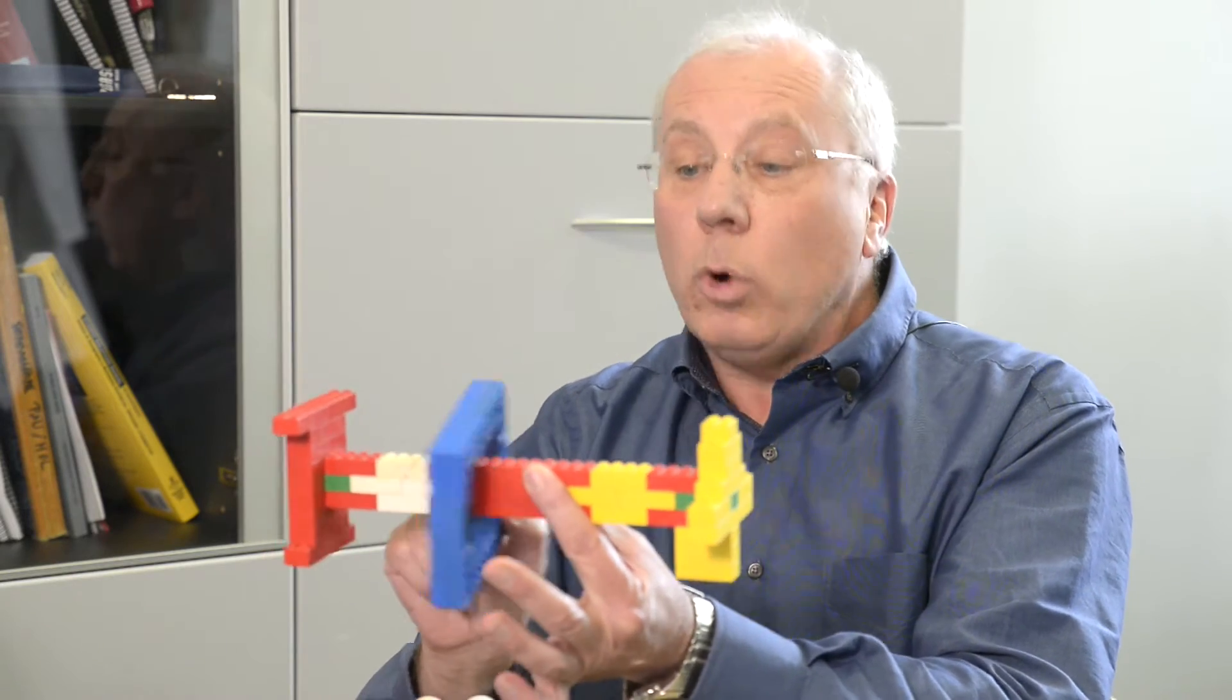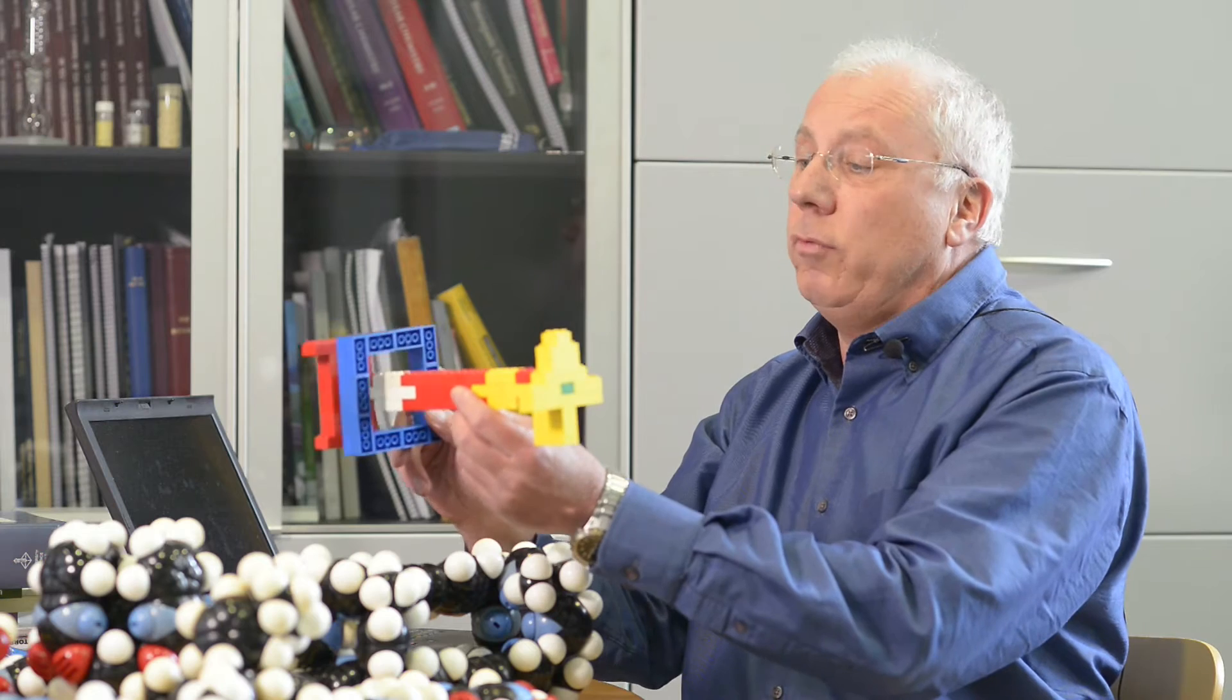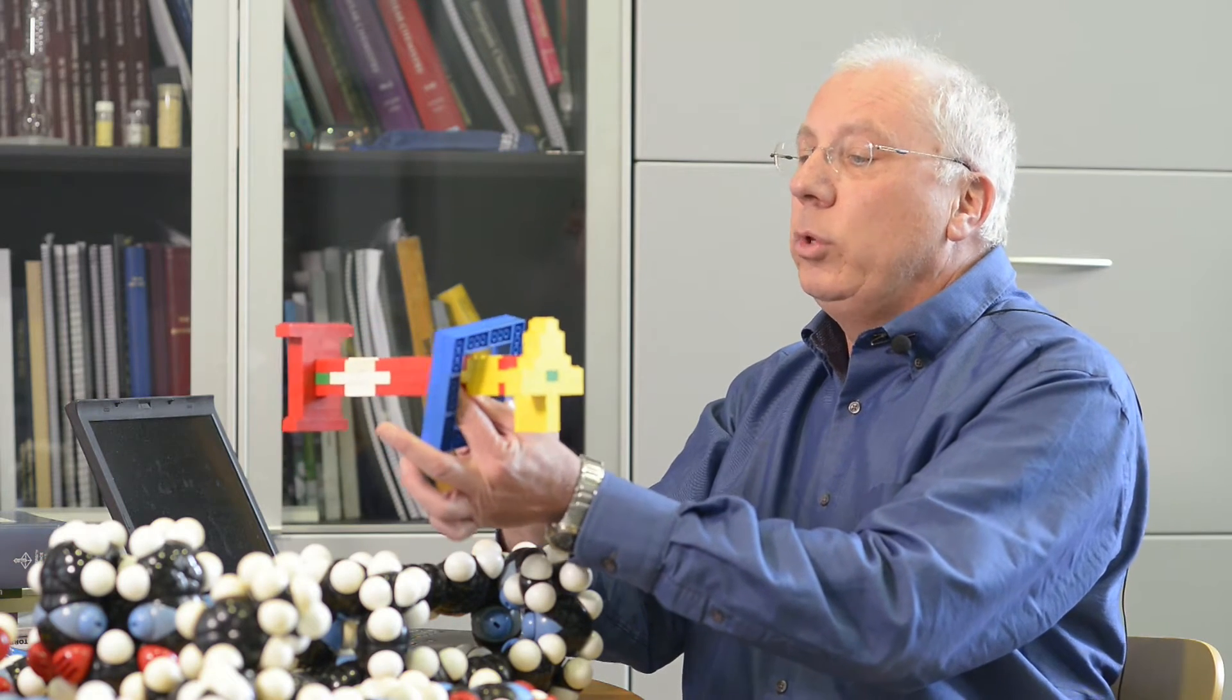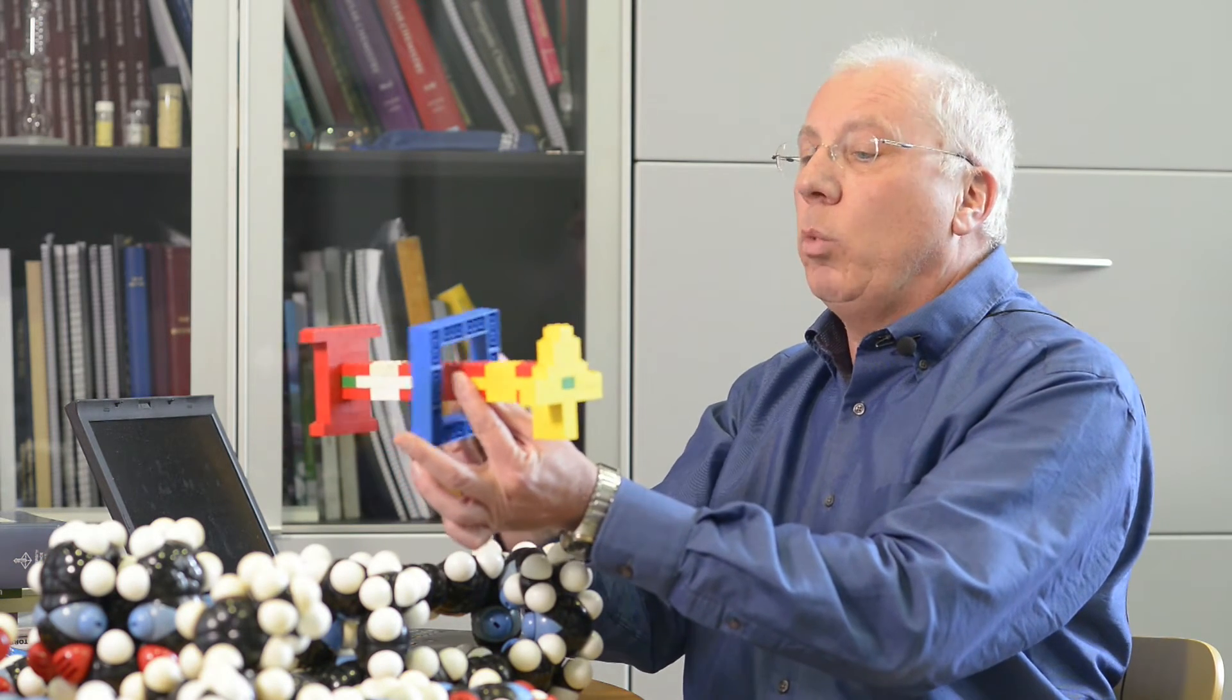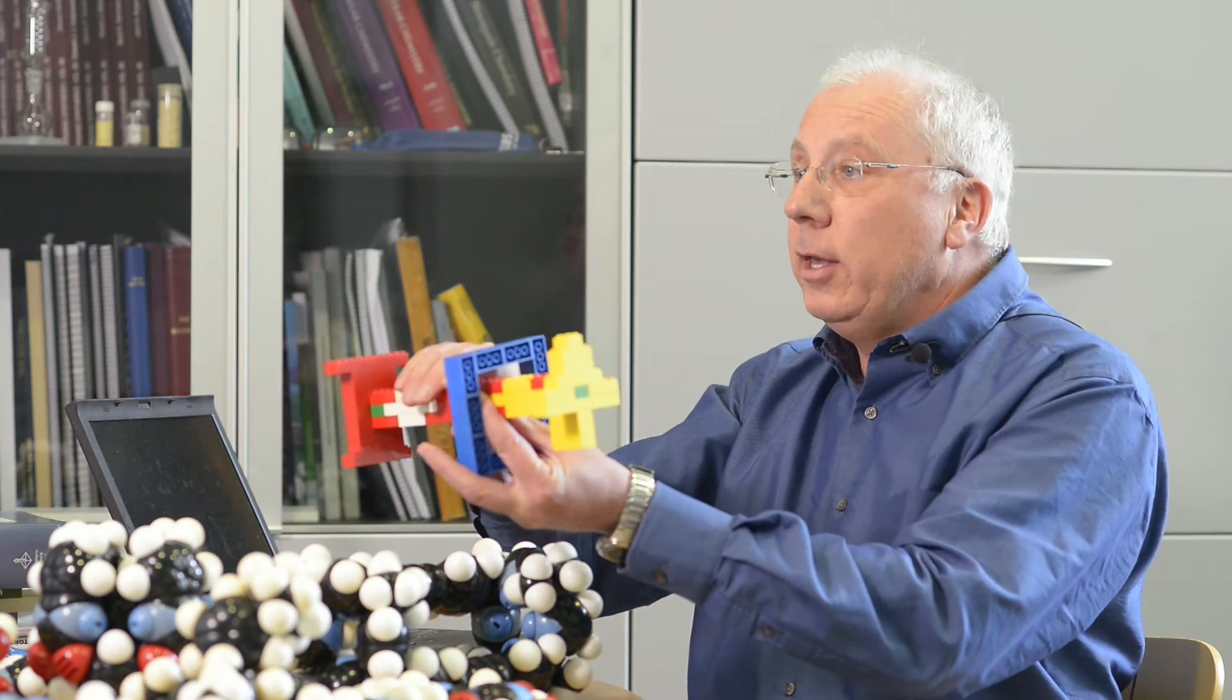And what we want to do with these molecules is to build very primitive molecular machines. So we want to control the movement from this rotor from the white station to the yellow station. And if we want to do that, we control translational motion, which is one of the important things if we want to construct molecular machines.